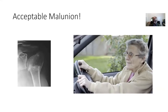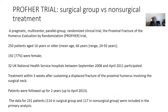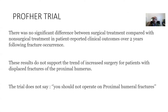This brings us to the PROFHER trial. It's a pragmatic trial where the patients entered were those in whom their surgeon was in equipoise — not sure whether to operate or not. This group of patients was randomised into a surgical and a non-surgical group and reviewed at two years. They found no difference between the surgical group and the non-surgical group at two years. These results do not support the increasing trend of surgery in proximal humeral fractures. However, this trial does not say you should never operate — only that if you are in equipoise, those patients who are not operated on will get as good a result without the risk of surgery.